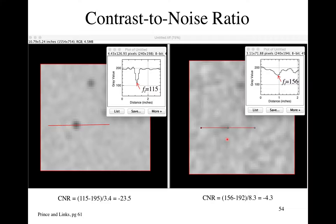Student question: when characterizing your system's signal-to-noise using a phantom, do you have to do it with different types of tissues or materials? The answer is yes — specifically in X-ray, different materials attenuate X-rays differently and modify the energy spectrum of the beam differently. Where an object is in the field of view actually matters for these parameters. It's quite complicated in CT and X-ray, but less so in NMR.